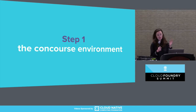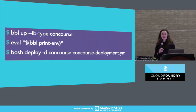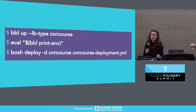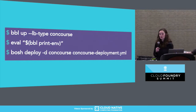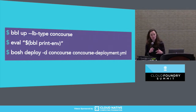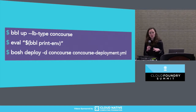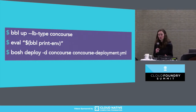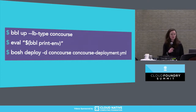So let's look at some code and get some specifics. For the Concourse environment, the first command you'll run is `bbl up` with an `--lb-type` flag specifying whether it's a Cloud Foundry or Concourse deployment. Once the environment is created, you can evaluate the output of `bbl print-env`, which helps you set environment variables on your workstation for the BOSH CLI to talk directly to your director. That way, you can go straight to the next step: `bosh deploy concourse`.